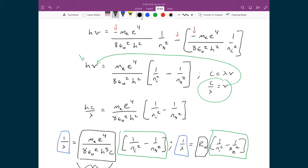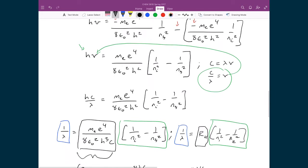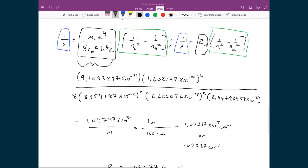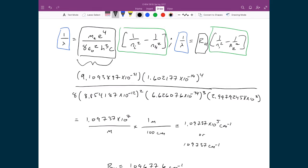Because this change in energy is equal to hν, we then used c equals λν, being the speed of light equals λν, to then substitute in for ν, or the frequency. So we put c over λ in for the frequency. And what we ended up with was an equation that looked very similar to the Rydberg formula.